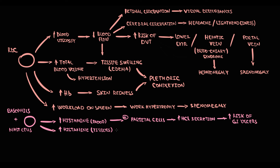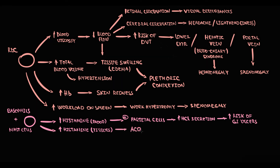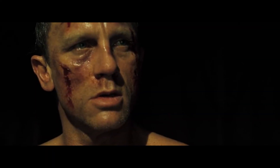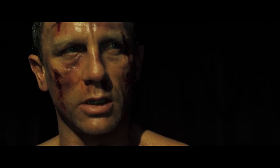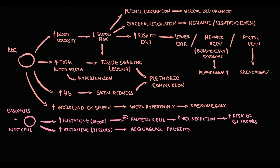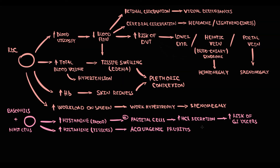Mast cells also contain a lot of histamine, and in polycythemia they also become hyperreactive. The major difference is that mast cells live in tissues. In polycythemia, when a person takes a hot shower, hot water can trigger the release of histamine from mast cells, causing severe pruritus. Because this pruritus is triggered by hot water, we call it aquagenic pruritus — and it is really a signature feature of this disease.